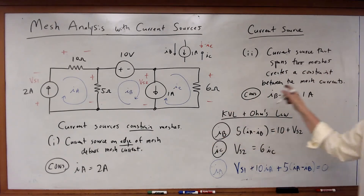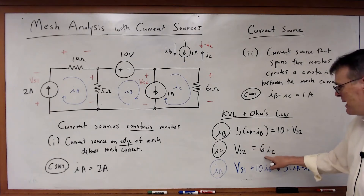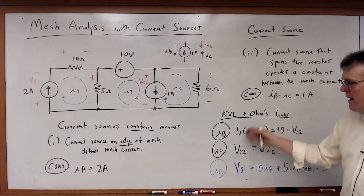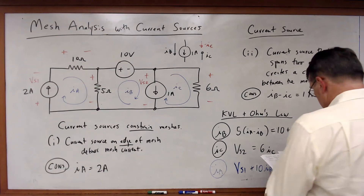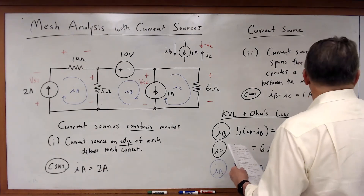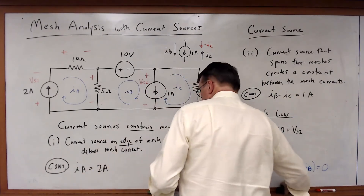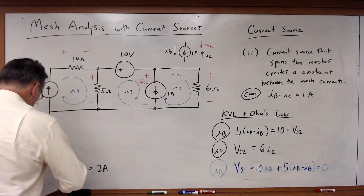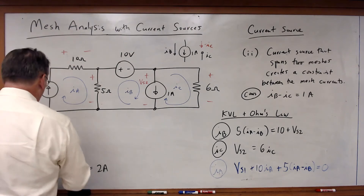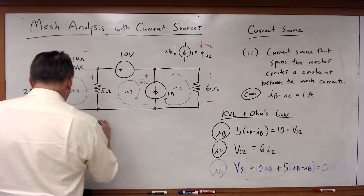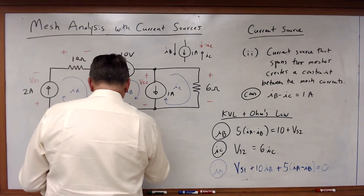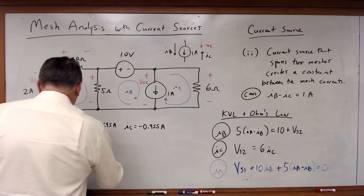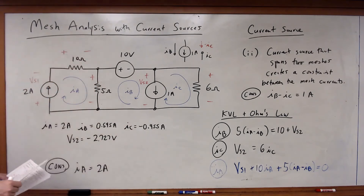Now I've got five equations. I have three currents — Ia, Ib, Ic — and two voltages — VS1 and VS2 — giving five variables and five equations, so now I can solve. What we get is: Ia = 2 amps, Ib = 0.545 amps, Ic = −0.455 amps, and VS2 = −2.727 volts. So I can now go through and solve with those answers.